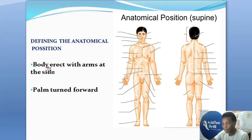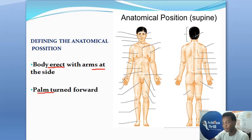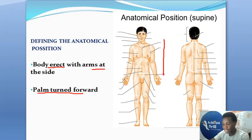Now apart from the body being erect, the arms are at the side — that's another thing that happens in anatomical position. And with the arms at the side, the palm is turned forward. Take a look at this picture right here. Can you see the man is standing erect? Take a look at his arm — the arm is turning forward, it is facing me. This is the anatomical position.